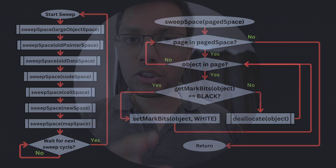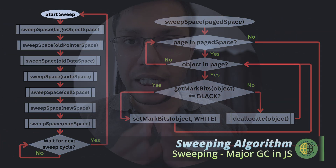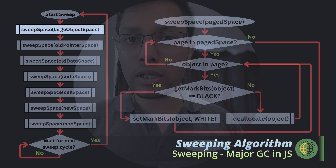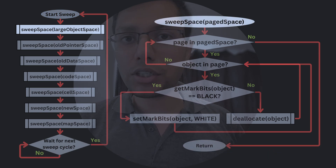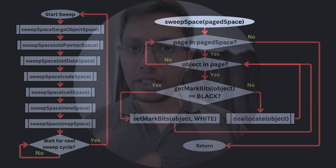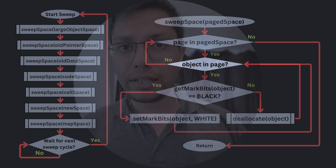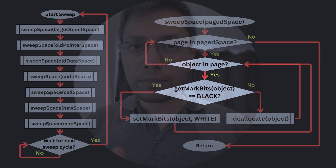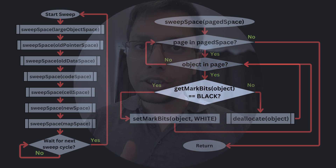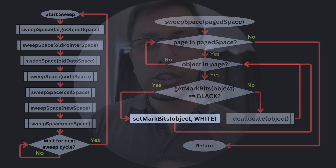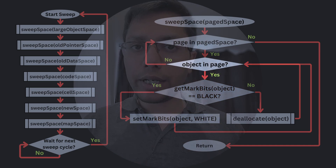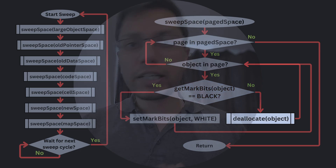Let's look at the flow of the sweep algorithm. Each heap space is swept one by one in a particular order by calling the sweep space function. Within the space, each page is iterated, and within a particular page, each object is iterated. When we iterate through each object, we check if an object is marked — meaning that the marked bits of the object are set to black. If it is, we clear it by setting the marked bits to white. Otherwise, we deallocate the object by assigning its reference to the respective free list.